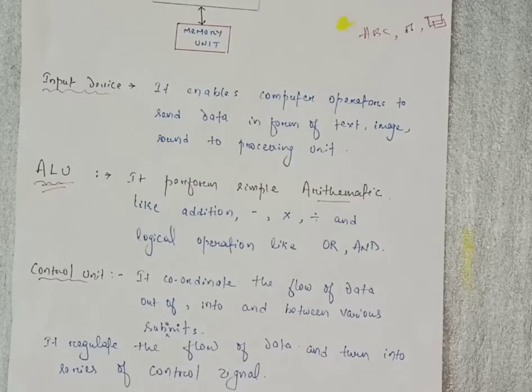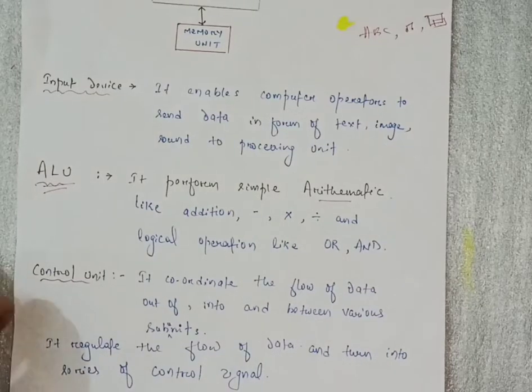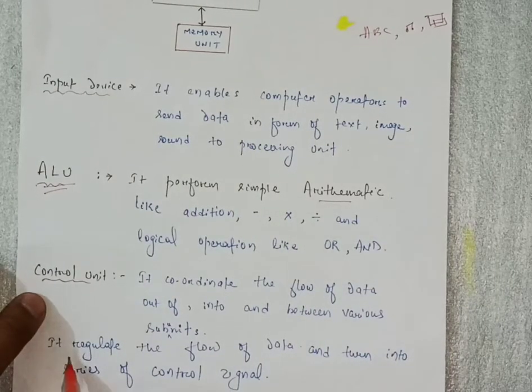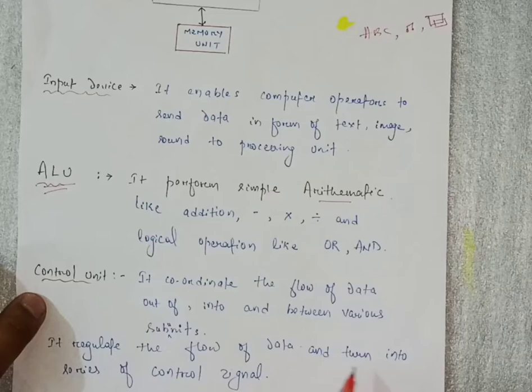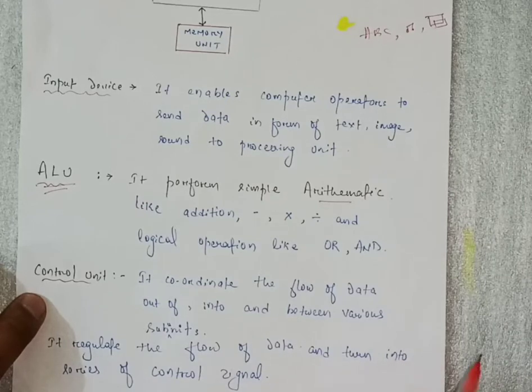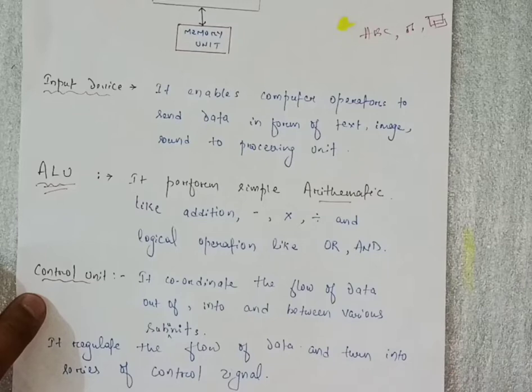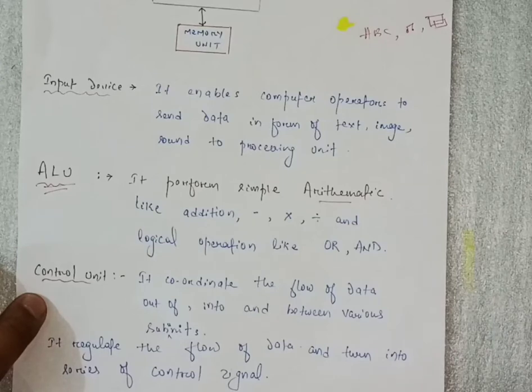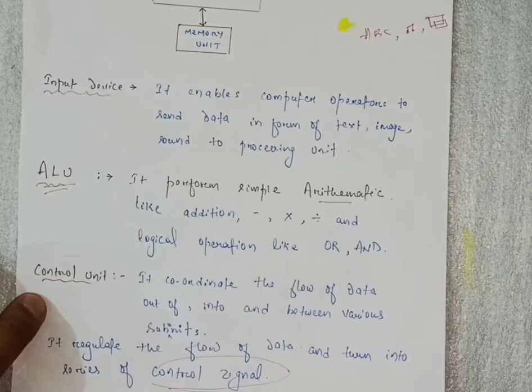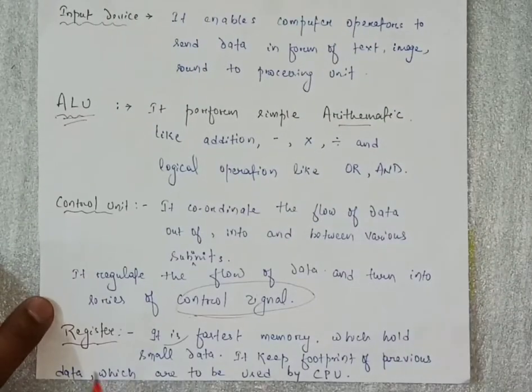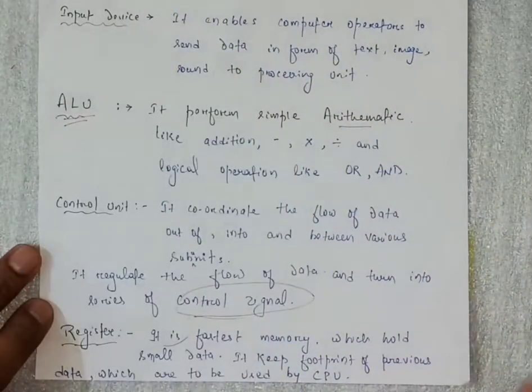It will help to flow the data in a particular amount - whatever we need as output, only that amount. It will regulate the flow of data and turn into series of control signals. The data which we feed, the control unit will control or convert all the data into control signals. And the another one is register, the third one is register array.